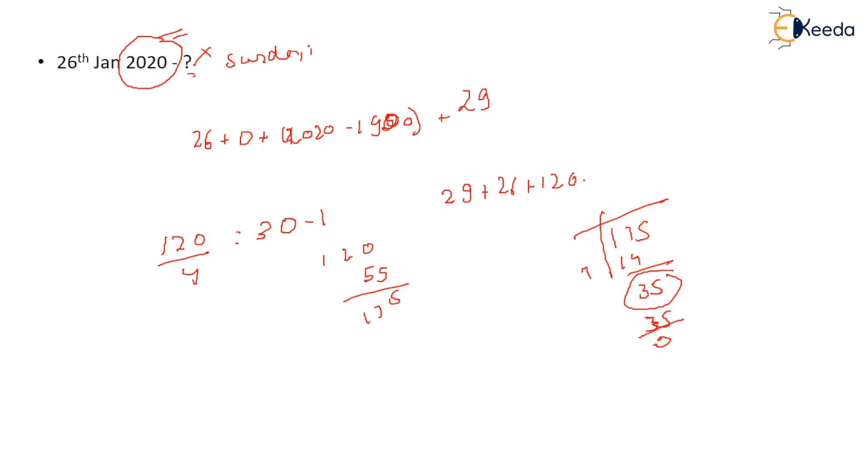Next question. These are certain dates you have to find out. Let's find out 11 March. What was the code for March? March was 3, right. Thus 2020, so 2020 minus 1900, right.